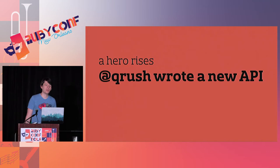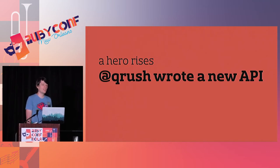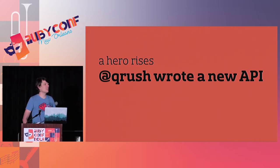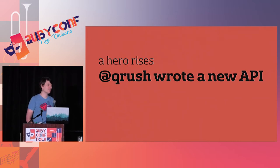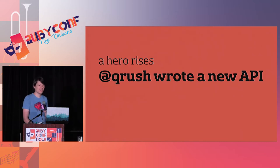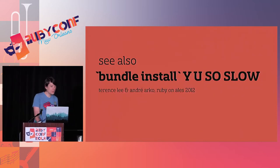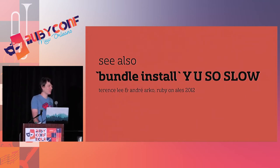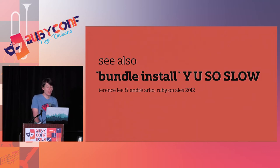This is about the time the Bundler team was saying, 'Man, it really sucks that we have to download so much data all the time.' Then Nick Quaranto just said, 'Oh hey, I added a new API to RubyGems that lets you ask for only the data you want. Here you go — it's up, live, in production, go.' If you're interested in the details, Terrence Lee and I gave a talk at Ruby on Rails 2012 called 'Bundle Install, Why You So Slow?' covering the technical details of the API and changes we had to make to Bundler.